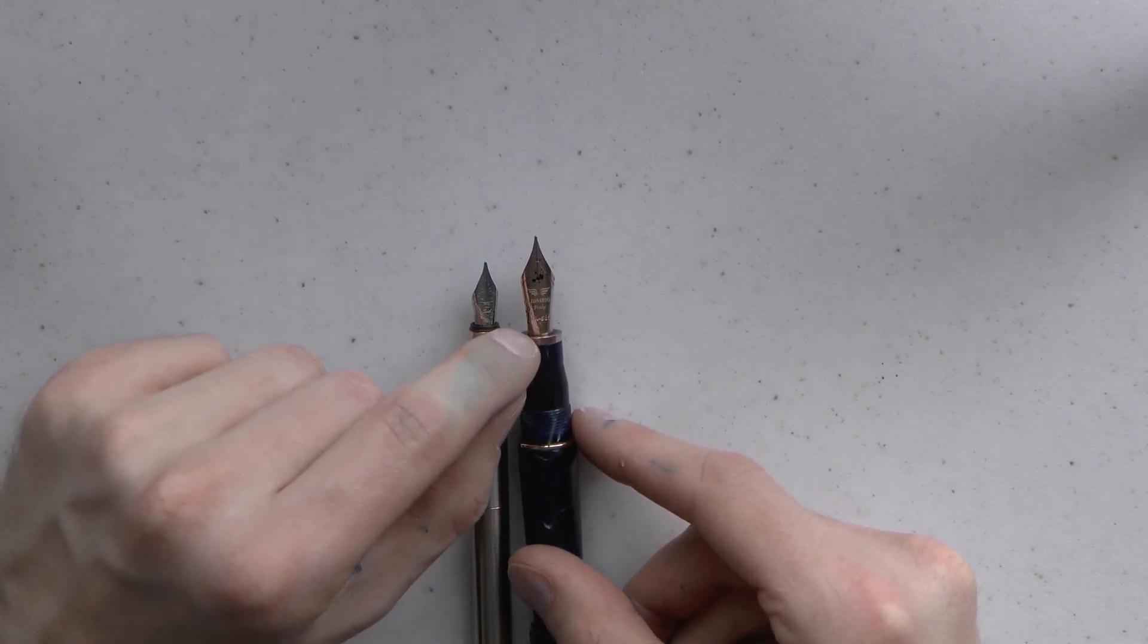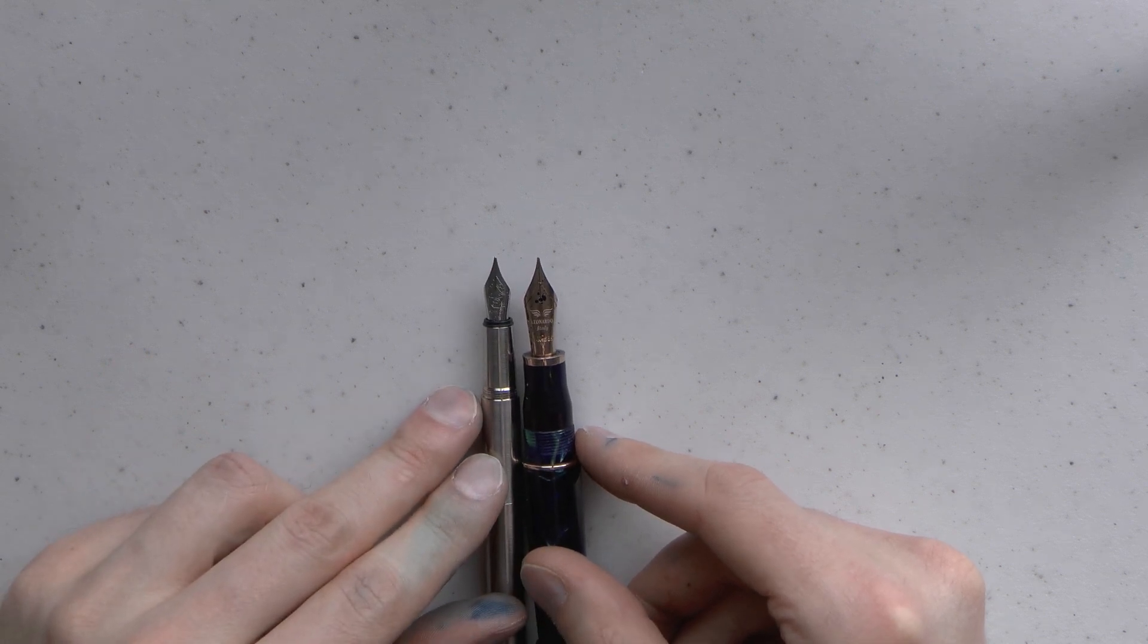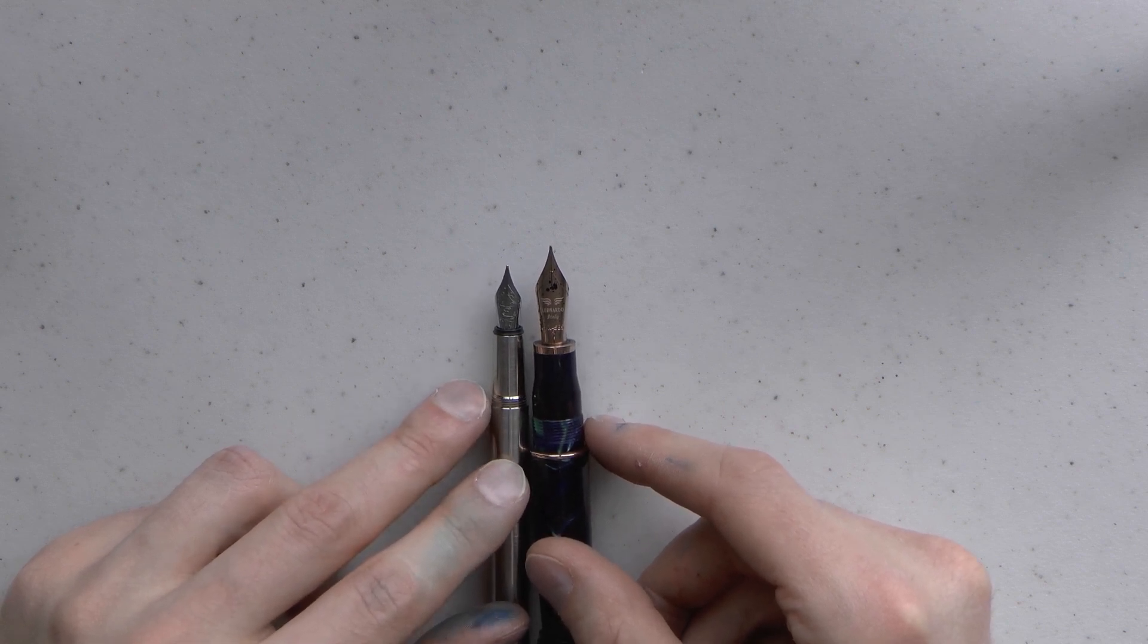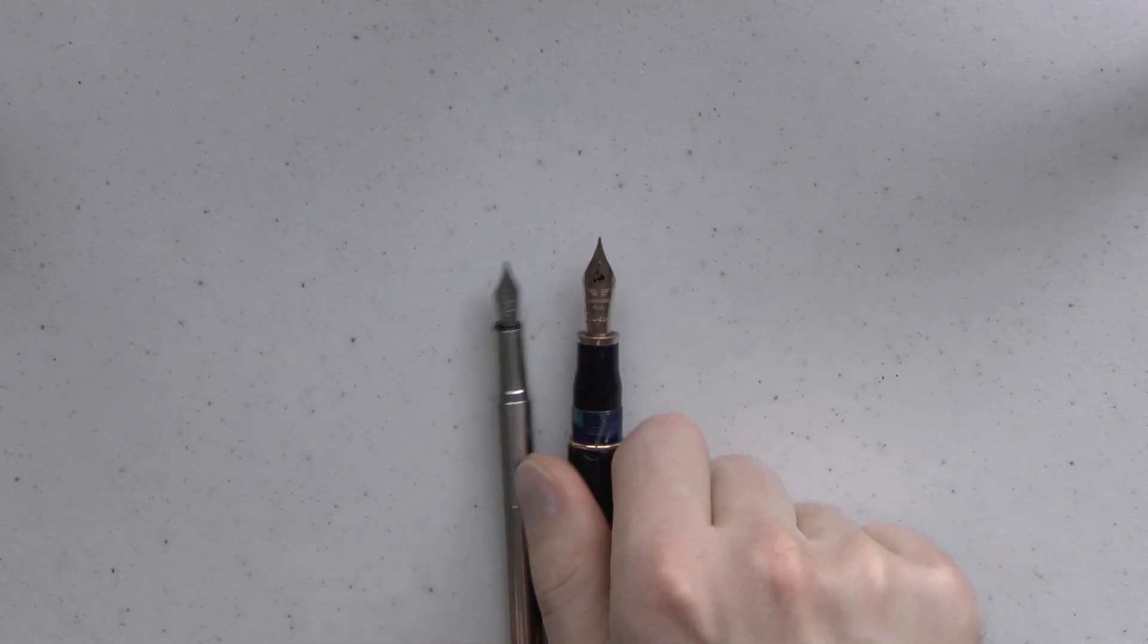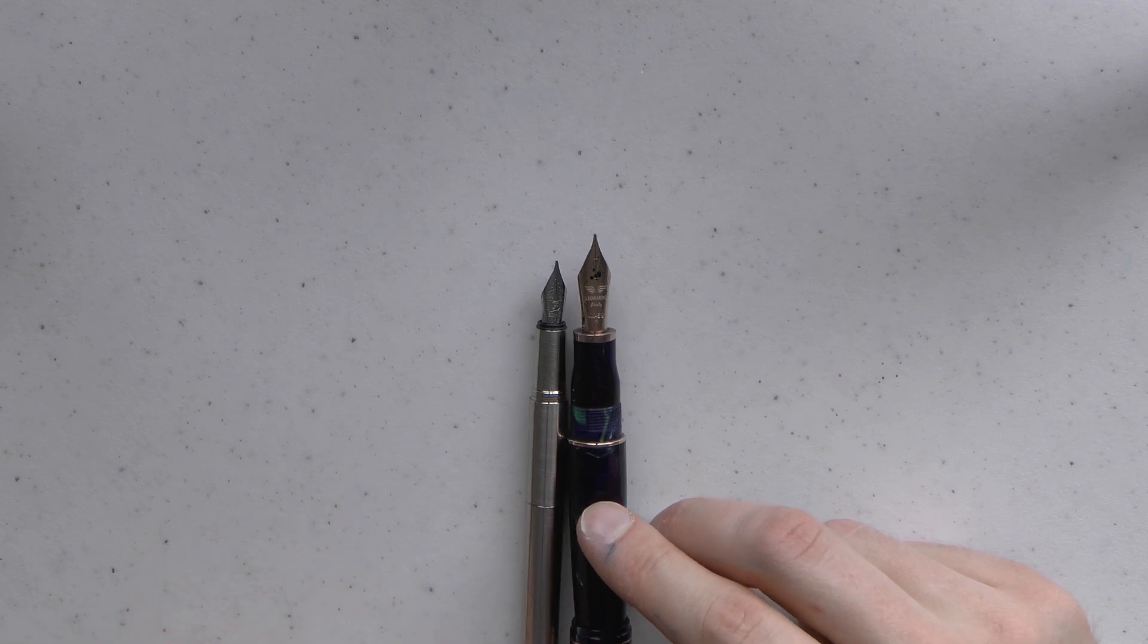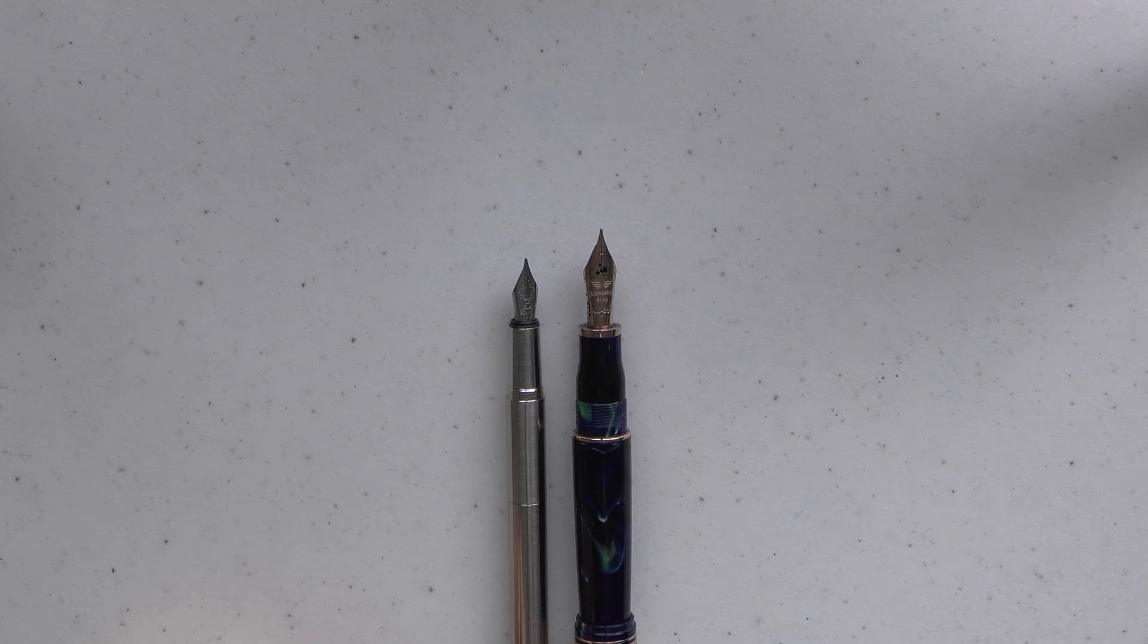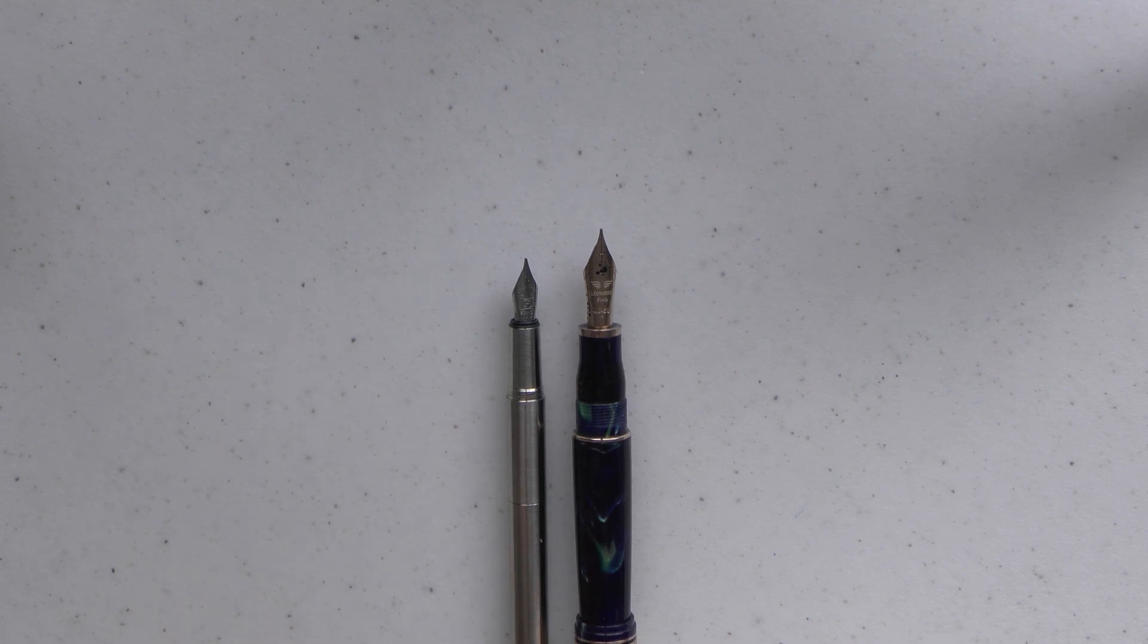Now, this is a number six nib. Bear in mind, this is not seated as deeply in the section as this number five is. But if I align just the tips, right, now you can see that the number six nib is quite a bit bigger. Again, were I to measure the diameter of the feed of this nib, it would be six millimeters. Then there is, and there is another difference, by the way, this is steel and this is a rose gold nib, but whether it's gold or gold-plated or rhodium-plated or titanium, that really shouldn't matter. Five is five millimeters, six is six millimeters, etc.